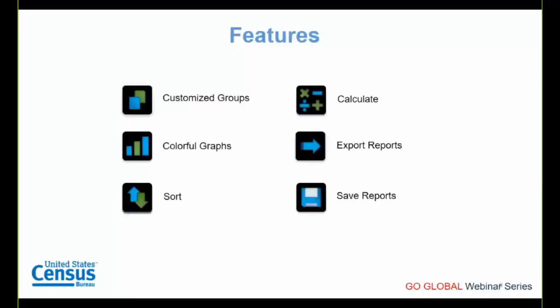USA Trade Online has many useful features. Perhaps the most important is customized reports — you can combine commodities, countries, states, ports, or time periods into customized groups. You can save your reports and view them at any time, and have them update automatically as new data is added. You can also sort the data in USA Trade Online or export it to your computer for custom calculations.